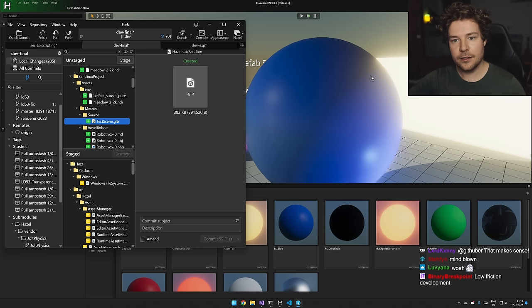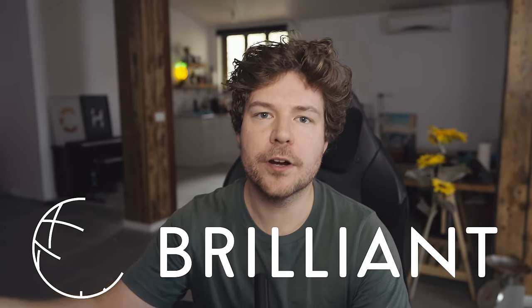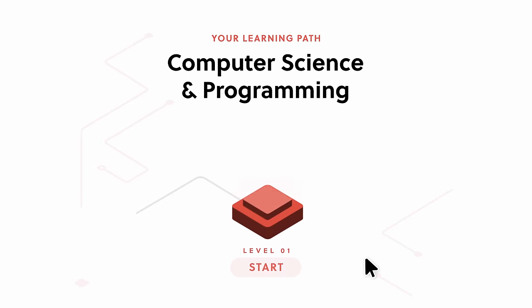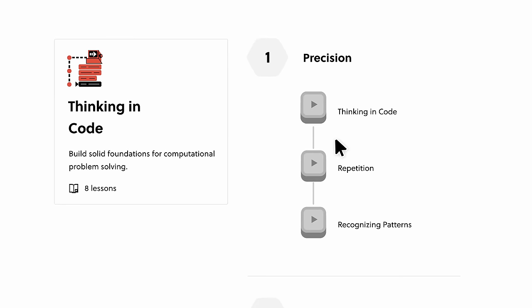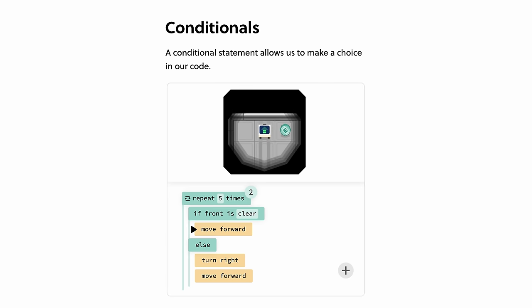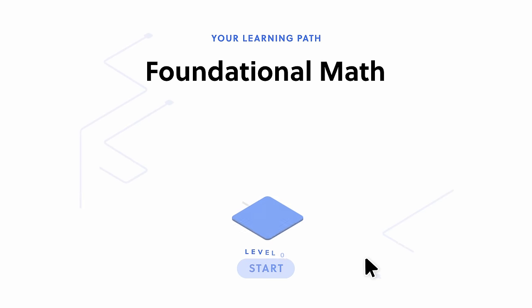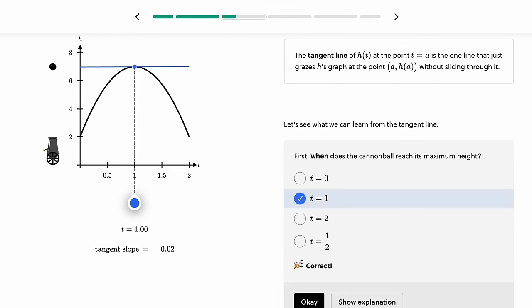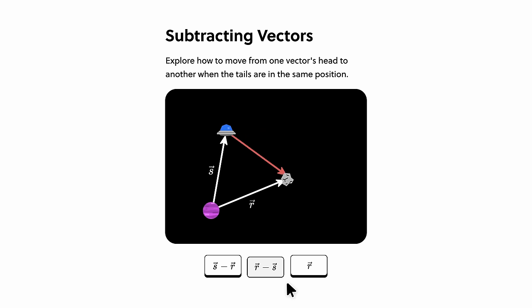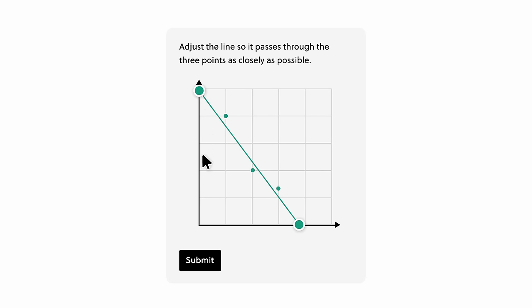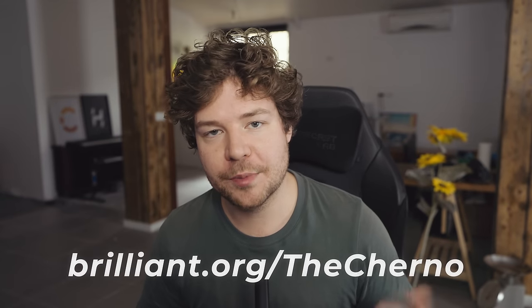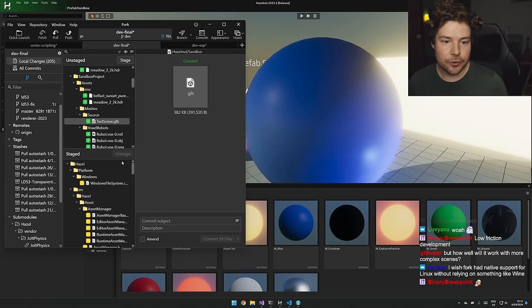We want to lean into that and take advantage of the fact that because Hazel is simple and not bloated, we can do this that quickly. If you guys are trying to learn programming and math, check out Brilliant.org, the sponsor of this video - free for 30 days. It's an amazing website with high quality courses on STEM topics, including programming courses great for beginners and a huge library of math courses. Go to brilliant.org - the link will be in the description - and get 20% off an annual premium subscription.